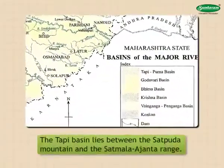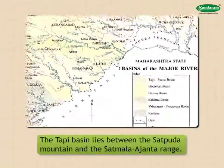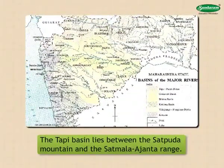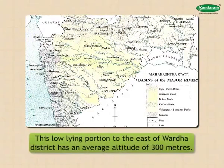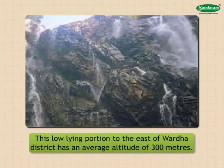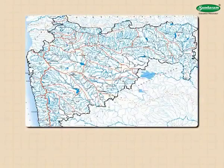These ranges separate the basins of the Godavari, the Bhima, and the Krishna rivers respectively. The Tapi basin lies between the Satpura mountain and the Satmala-Ajanta range. The eastern part of the Maharashtra plateau is a low-lying plain. This low-lying portion to the east of Wardha district has an average altitude of 300 meters. The overall slope of the Maharashtra plateau is from west to east.